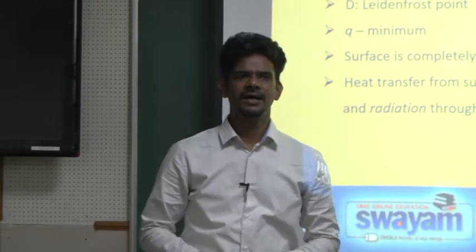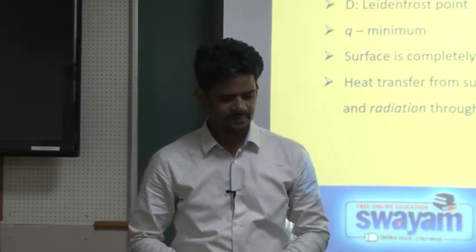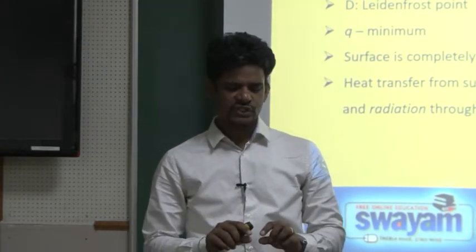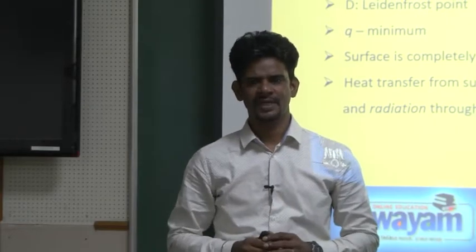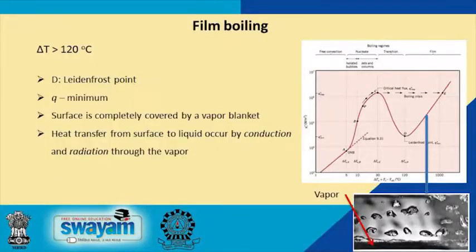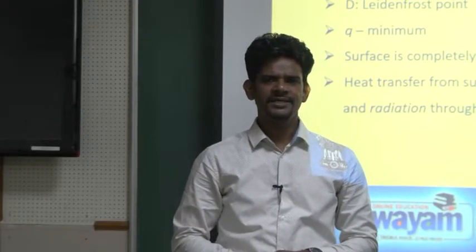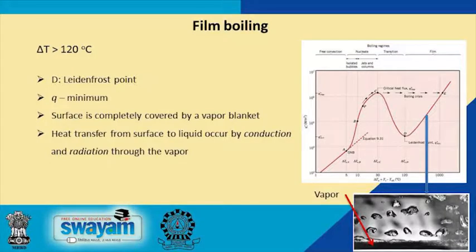The final regime is film boiling. In this regime the temperature difference is so high that on the heated surface a thin blanket of vapor is always present. Vapor bubbles form from the interface between this vapor film and the liquid above it, and the liquid has no direct contact with the surface. Heat transfer from the surface to the liquid is limited by the thin film of vapor, and the dominant heat transfer modes are conduction through the vapor as well as radiation through the vapor.